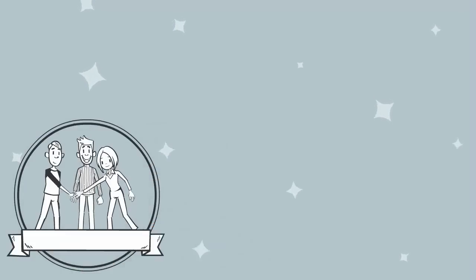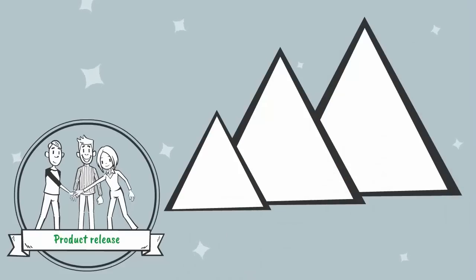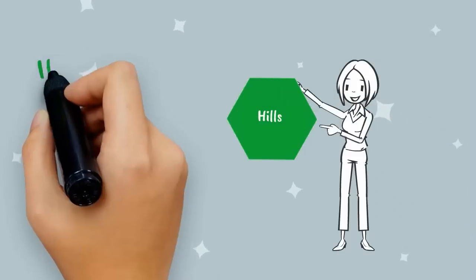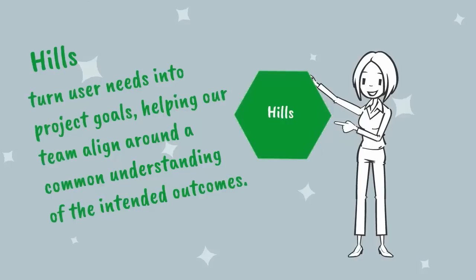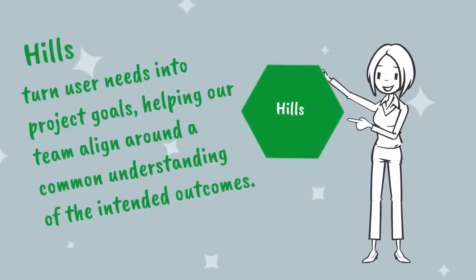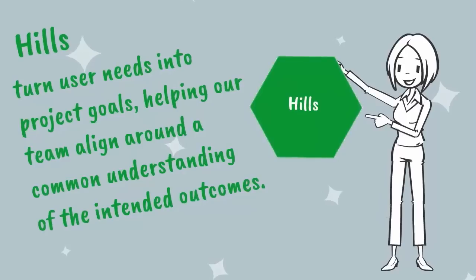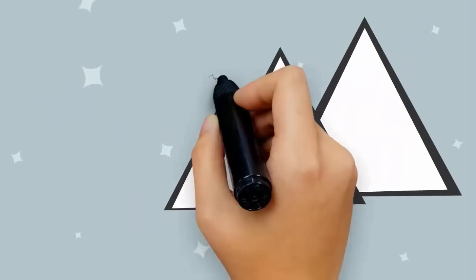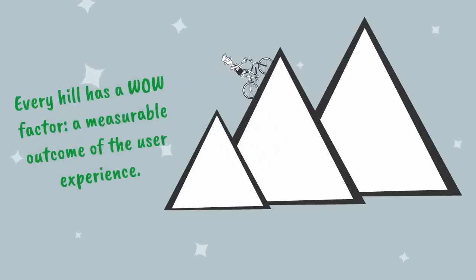For each release of the product, designers and developers collaborate with product management to identify the hills that can be set as the guide for the project. A hill is a statement of intent. Hills turn user needs into project goals, helping our team align around a common understanding of the intended outcomes. And every hill has a wow factor — a measurable outcome of the user experience.